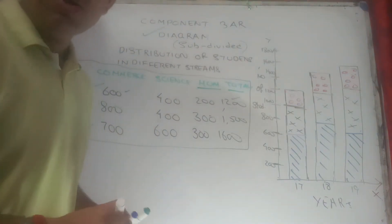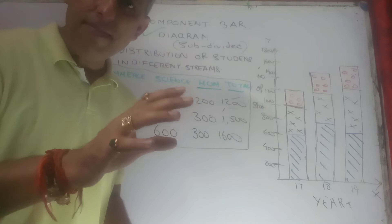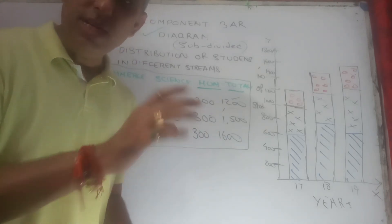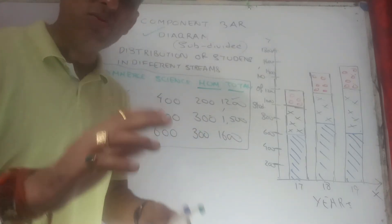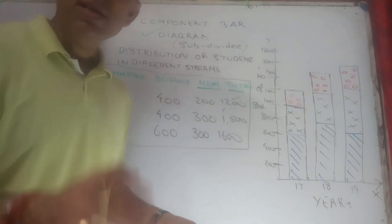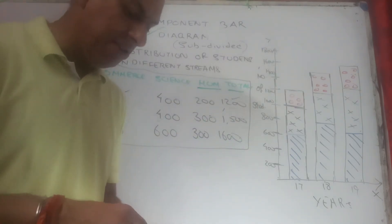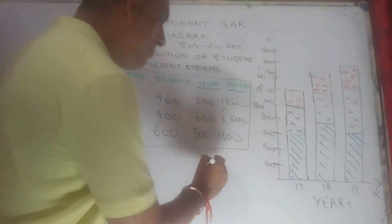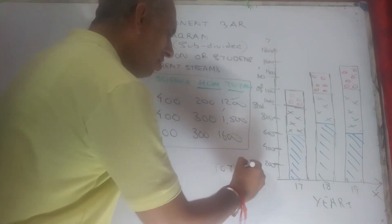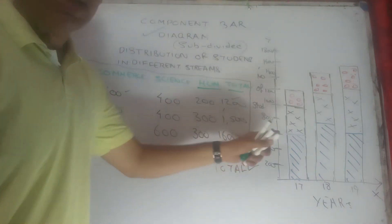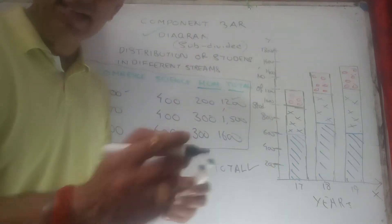Now, what is the utility of the component bar diagram? Remember, in multiple bar diagrams, imports and exports were taken where the total is irrelevant. Here, the total might be relevant. So if some part or difference is asked of you, you better make the point clear: when the totals of variables are relevant, the component bar diagram is the better option rather than the other one.